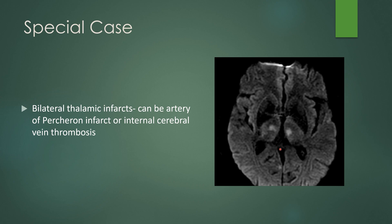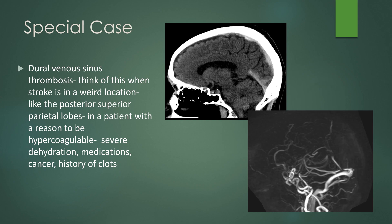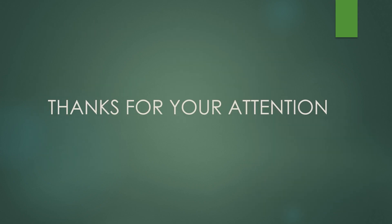Think of dural venous sinus thrombosis when you have a stroke in a weird location, such as the posterior superior parietal lobes — the superior sagittal sinus drains this convexity area. If a patient is hypercoagulable — severely dehydrated, on relevant medications, has cancer history, or a history of clots — check the non-contrast head CT. A thrombosed dural venous sinus appears bright, almost like the patient had contrast. In this case, there are clots in the superior sagittal sinus and straight sinus, and the MRV shows no flow within the superior sagittal sinus. Thank you for your attention.